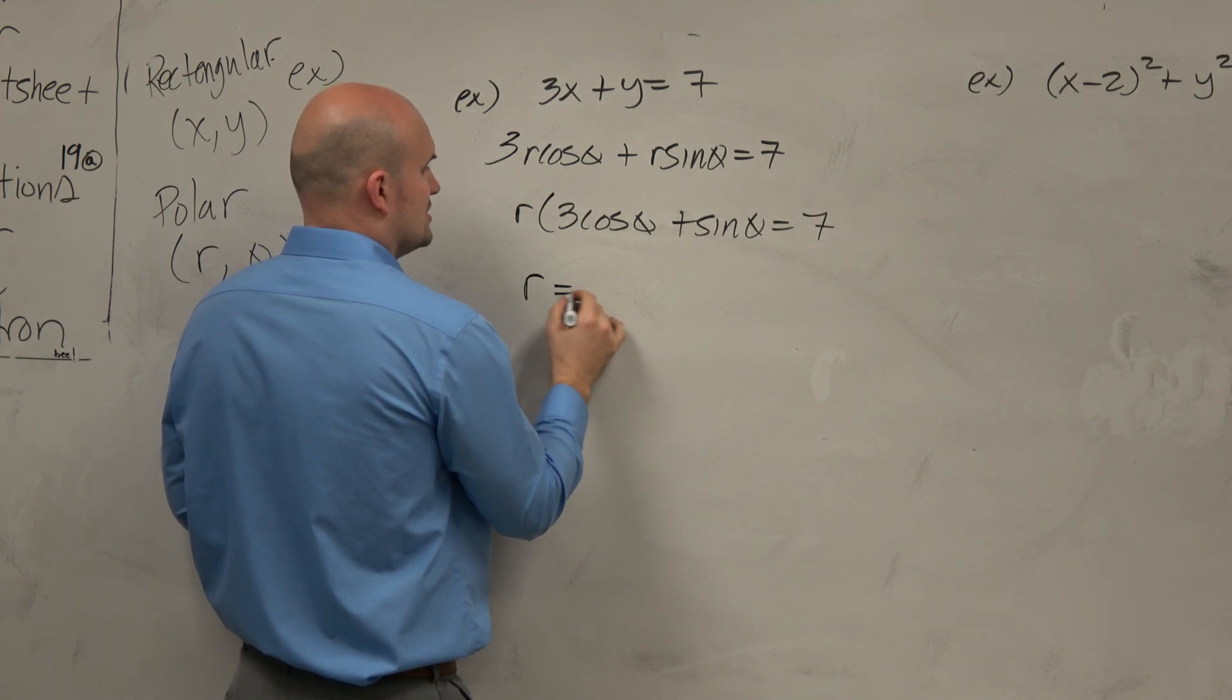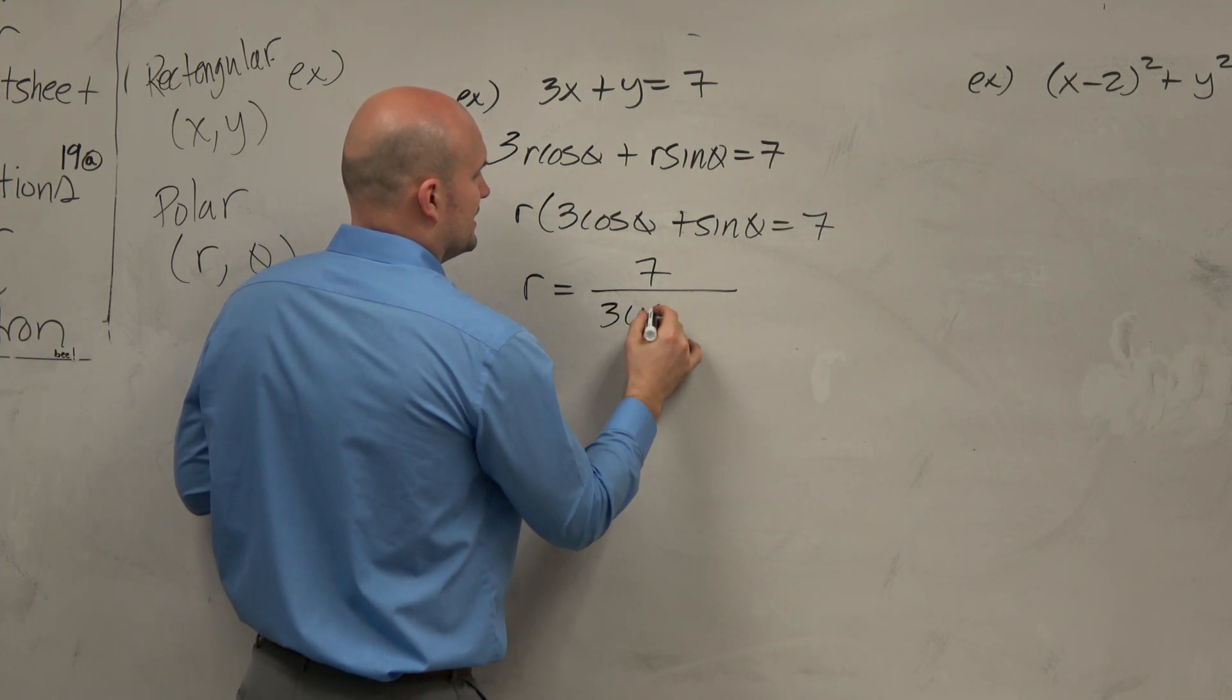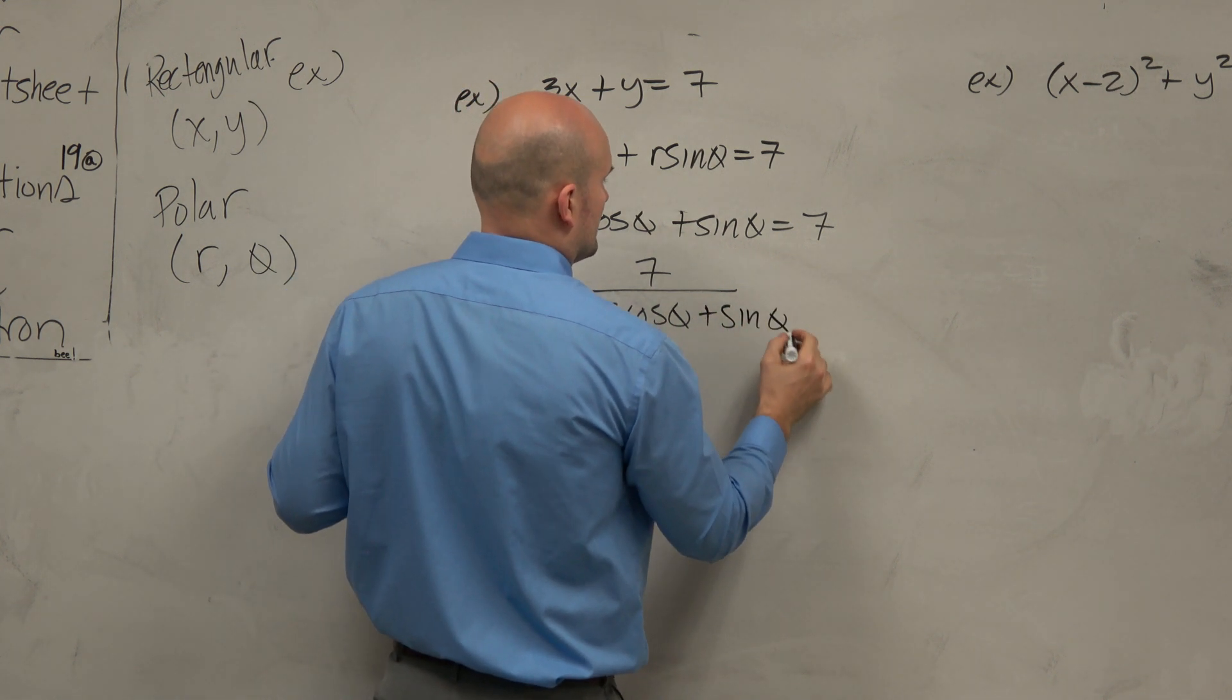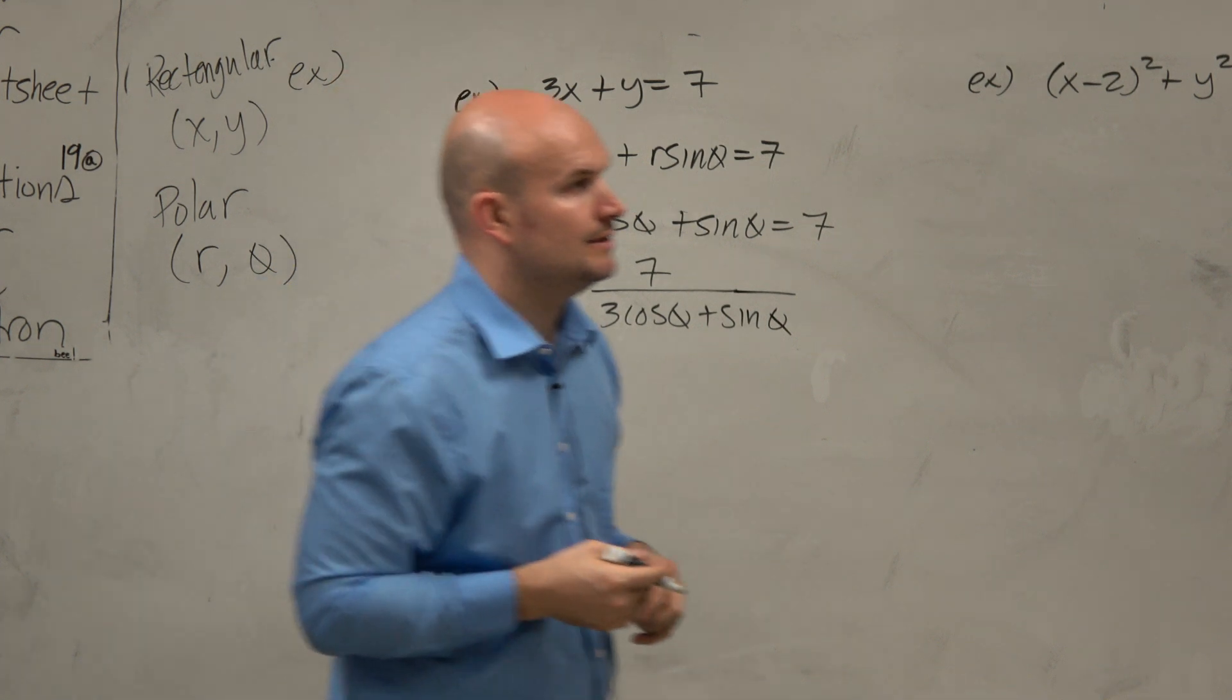And then we're going to say r equals 7 over 3 cosine theta plus sine theta. And there you go, done.